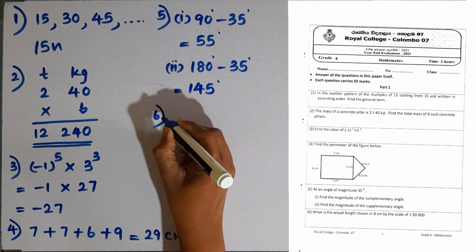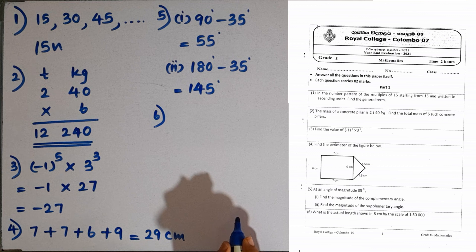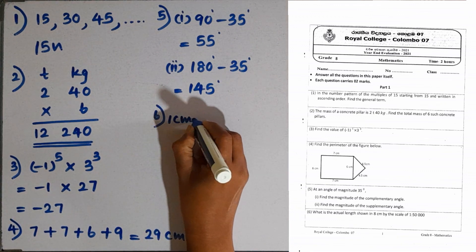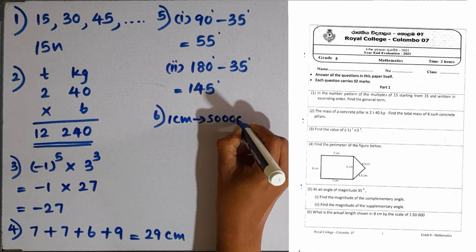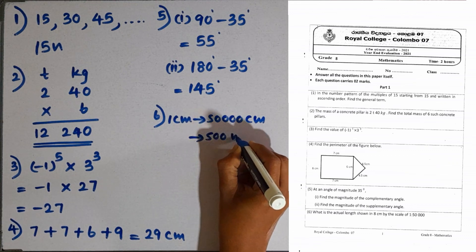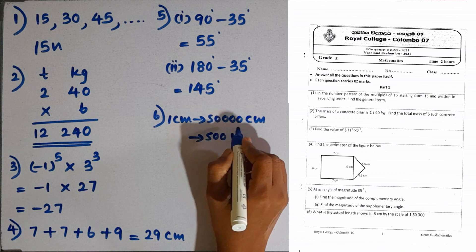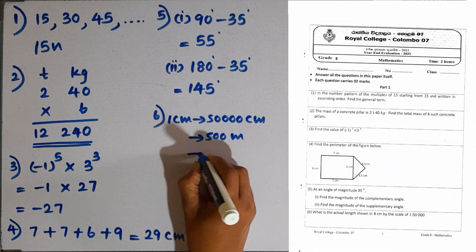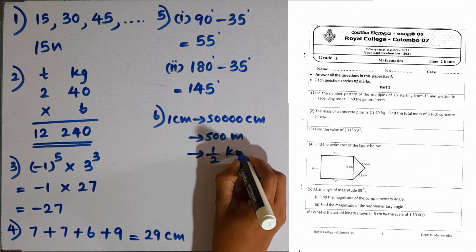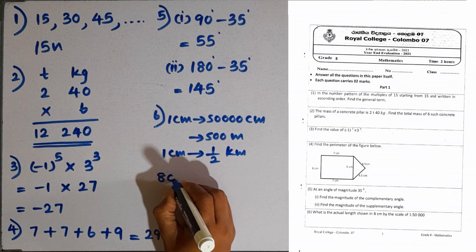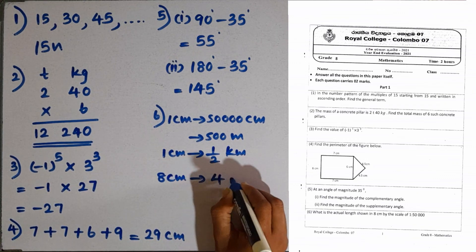Question number 6. What is the actual length shown in 8 centimetres by the scale of 1 to 50,000? 1 to 50,000 means 1 centimetre represents 50,000 centimetres. If we convert this to metres, it becomes 500 metres, dividing by 100 as 1 metre equals 100 centimetres. So 500 metres means half a kilometre. 1 centimetre represents half a kilometre, so from 8 centimetres, the answer is 4 kilometres.